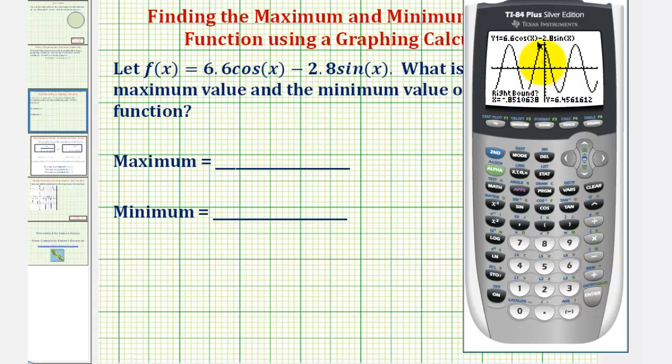And now, for the right bound, we have to move the cursor to the right of the high point. Maybe somewhere over here. Press enter. Now, when it says guess, we can simply press enter. Or, if we want, we can move the cursor closer to the high point. Maybe somewhere in here and press enter. Notice how the y coordinate, our maximum value would be approximately 7.1694.